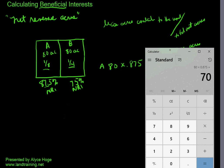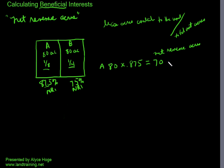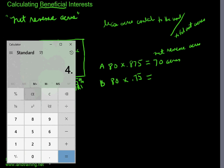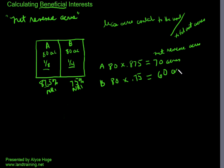So the net revenue acres for Owner A is 70 acres — instead of 80 acres, it's 70 because it's 87.5% of 80, taking into account the net revenue interest. Now for Owner B, that's 80 times 0.75, which equals 60 acres. So now they don't each have 80 acres contributing — they have 70 net revenue acres and 60 net revenue acres. We're converting these lease acres to net revenue acres by taking into account the net revenue interest. Adding these together gives us 130 net revenue unit acres.